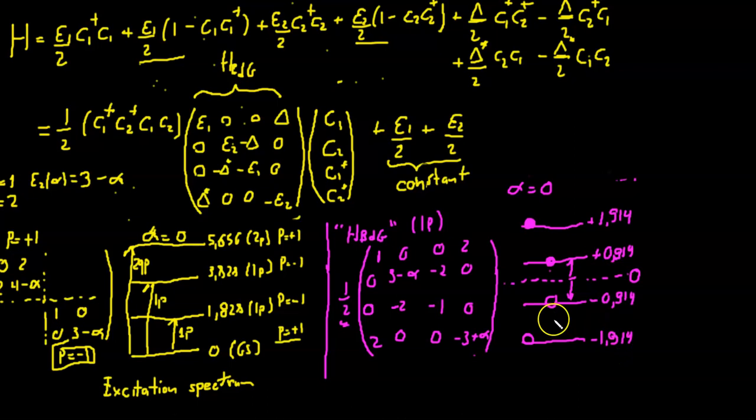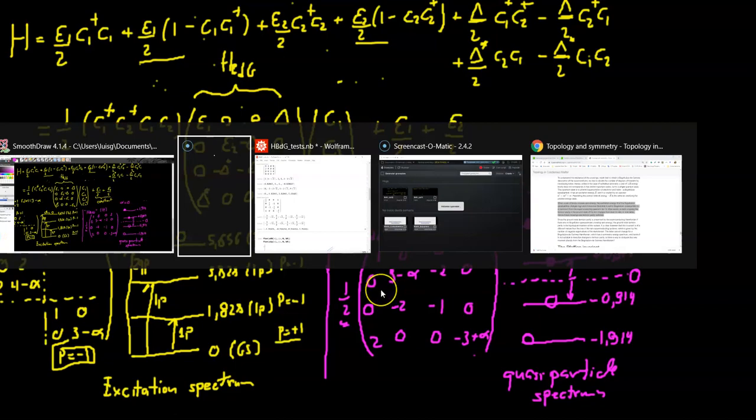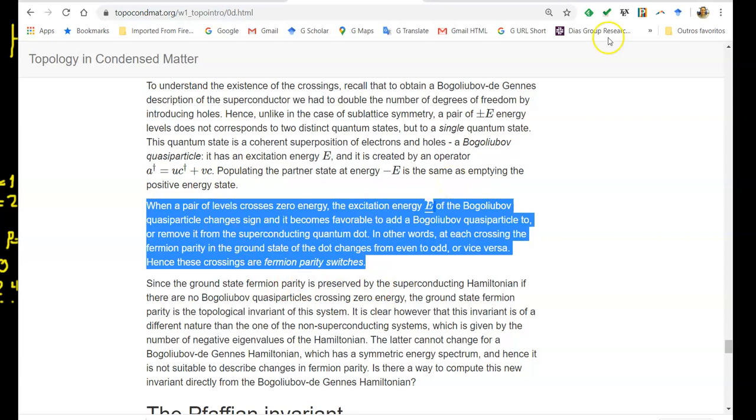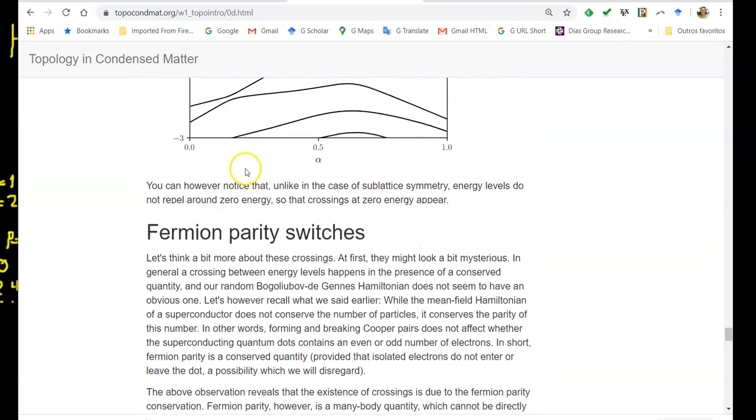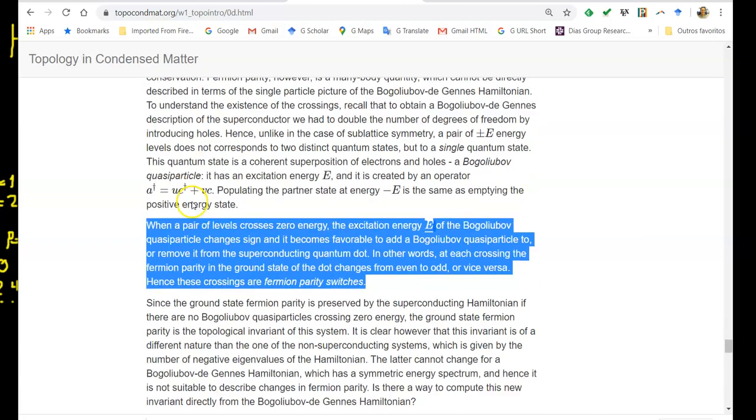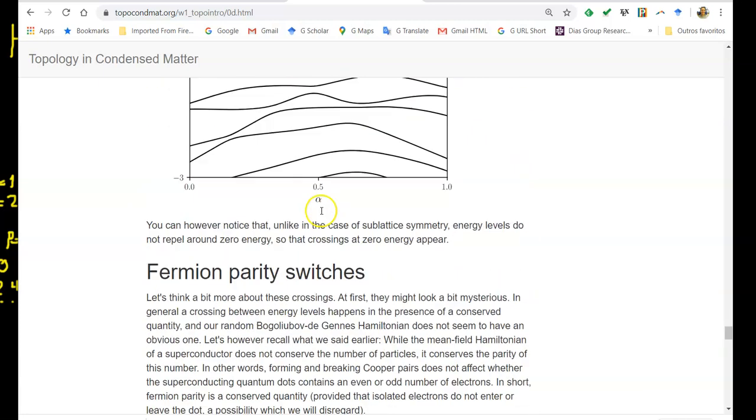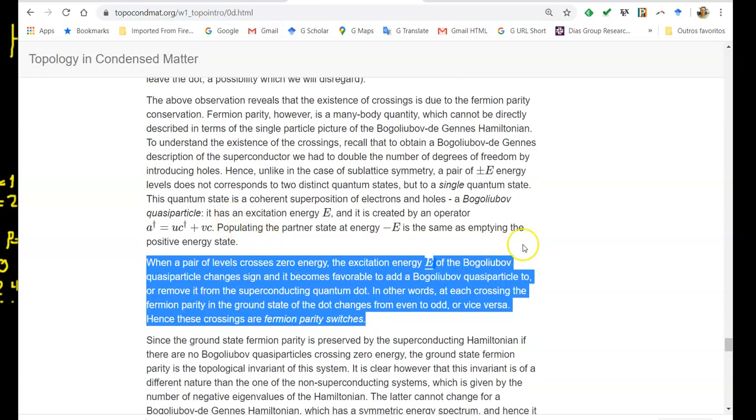Remember that I have to add the absolute value of these guys. I have the two quasi-particle excitation that I have here. So that's how I translate the quasi-particle spectrum into my excitation spectrum. Now, what about those crossings that we were discussing? Remember in the topology and condensed matter lectures that we were discussing this paragraph. Now, when levels cross zero energy, this is the Bogoliubov spectrum. The excitation energy of the Bogoliubov quasiparticle changes signs and then we have a parity switch. What does that mean?